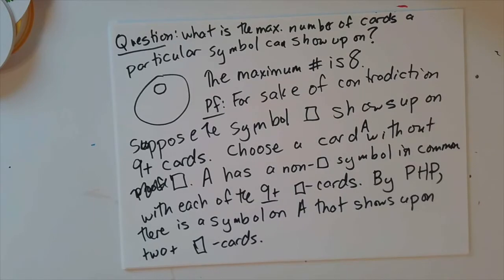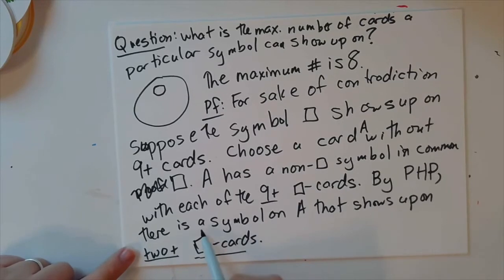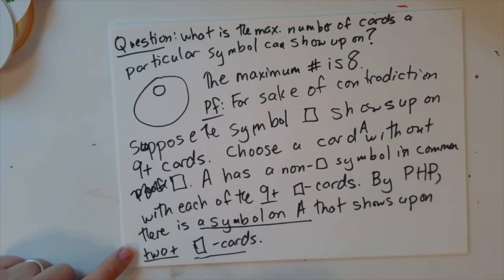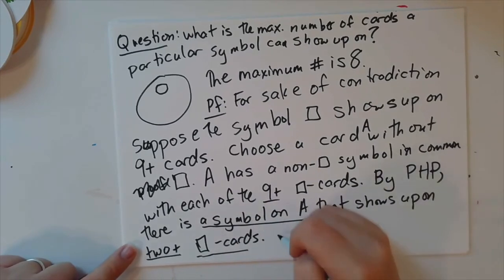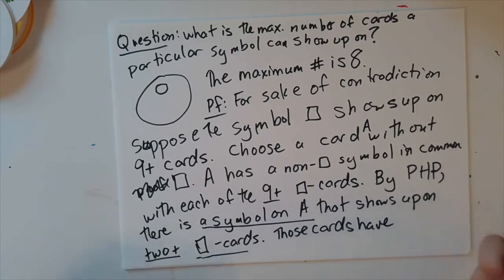But this is now a contradiction because those two plus square cards that share a symbol on A, those actually have two in common. And so that's a contradiction.